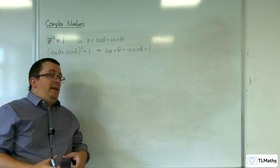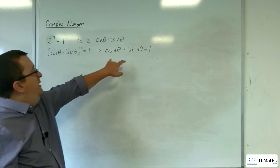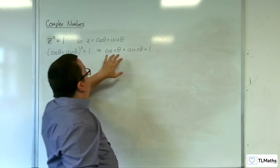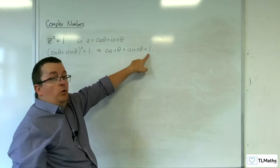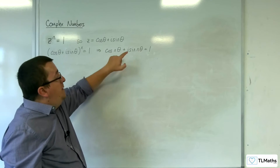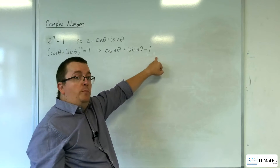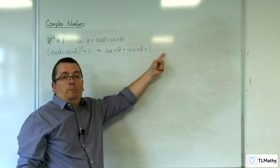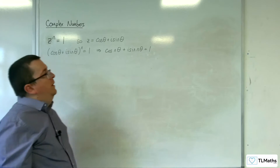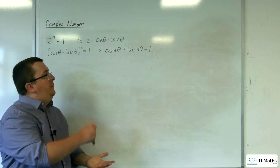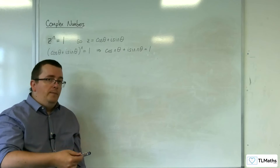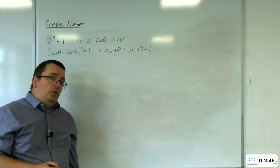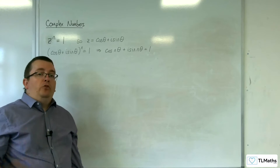In order for that to be the case, the real part of the left-hand side must equal the real part of the right-hand side. So cosine n theta must be equal to 1. And the imaginary part of the left-hand side must equal the imaginary part of the right-hand side. So sine of n theta must be equal to 0, because this is 1 plus 0i.